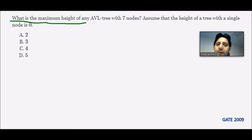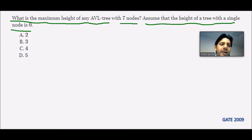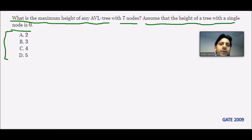What is the maximum height of any AVL tree with seven nodes? Assume that the height of a tree with a single node is zero. We have to find out the height of an AVL tree which has seven nodes, and the root node is at the zeroth level. We are aware that an AVL tree follows the balancing factor formula, and the balancing factor should be minus one, one, or zero for each node.